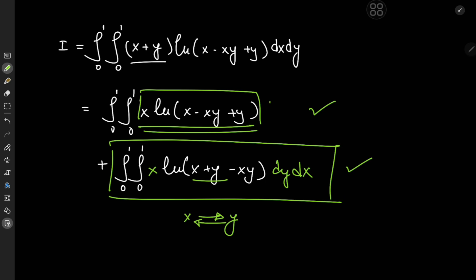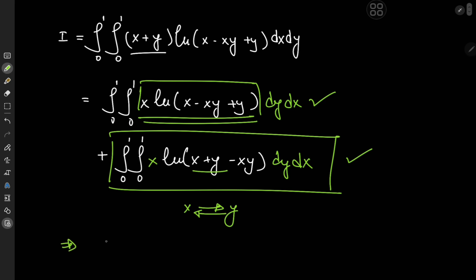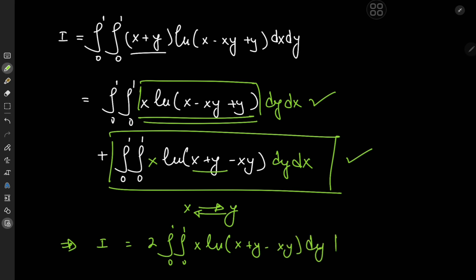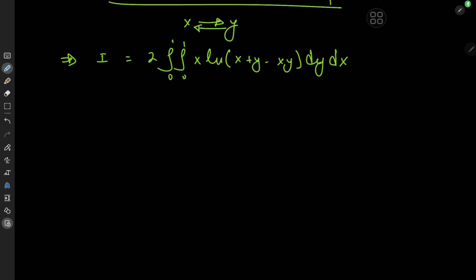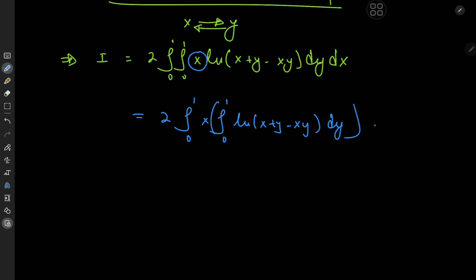So I could modify this to write it as dy dx, meaning integration first with respect to y and then with respect to x. So that means, by virtue of the symmetry we've just uncovered, that I equals twice the double integral from 0 to 1 of x times the natural logarithm of x plus y minus xy, integrated first with respect to y and then with respect to x. There's a reason I want to integrate first with respect to y, and that's because I can take the x term outside the first integration operator and write this as twice the integral from 0 to 1 of x times the integral from 0 to 1 of log(x plus y minus xy) dy, dx.